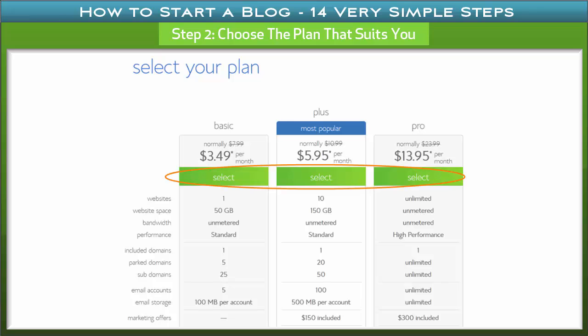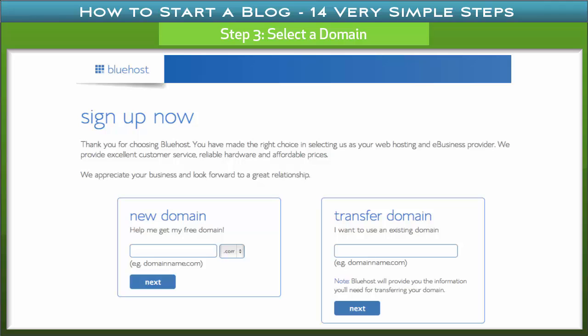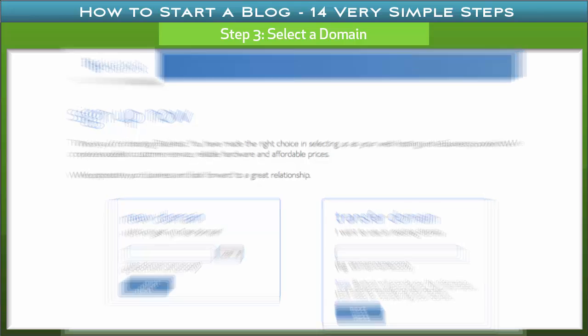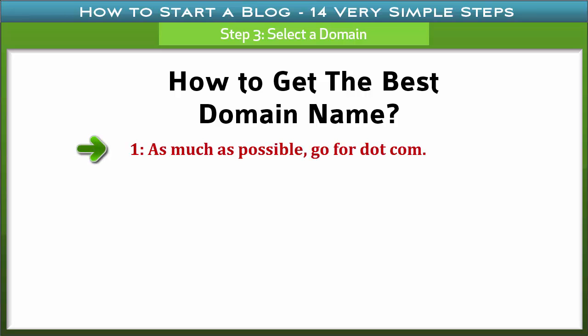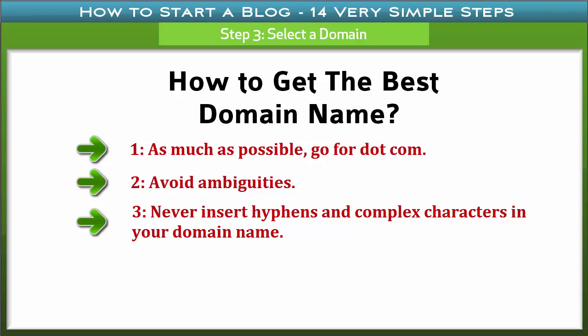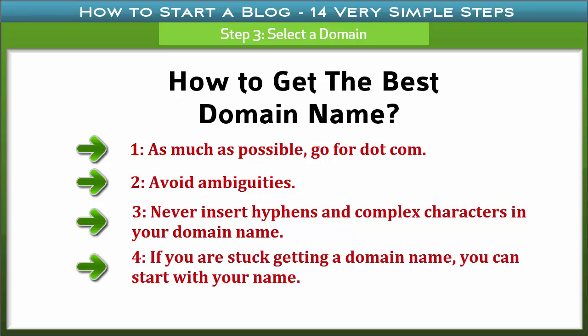It is good to know that all hosting plans include a free domain. Step 3: Select a domain. A domain is simply the name you wish your website to be addressed by — for example, seotools.net. After entering your domain, ensure you choose the right extension such as .com or .net. Tips for the best domain name: prefer .com, avoid ambiguities, never use hyphens or complex characters, consider starting with your own name if stuck, and flex your creativity.